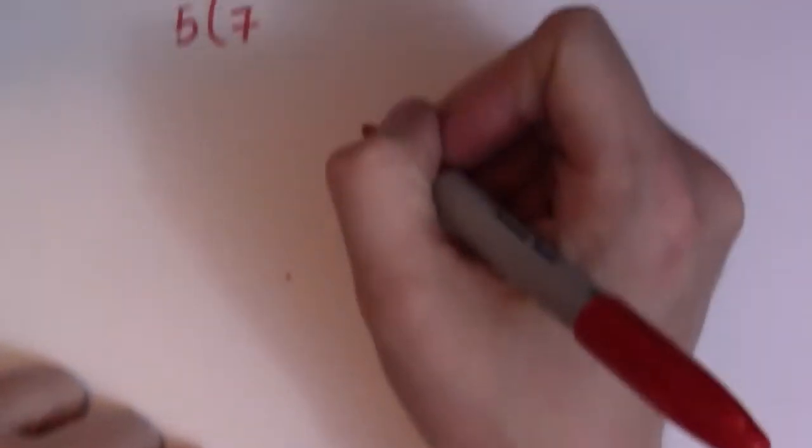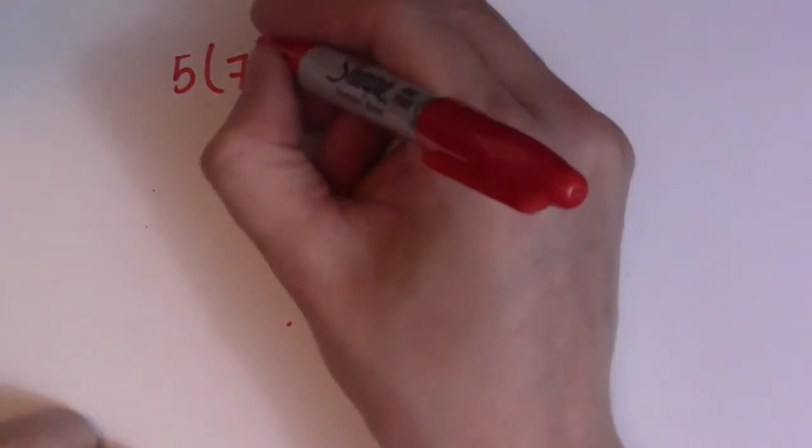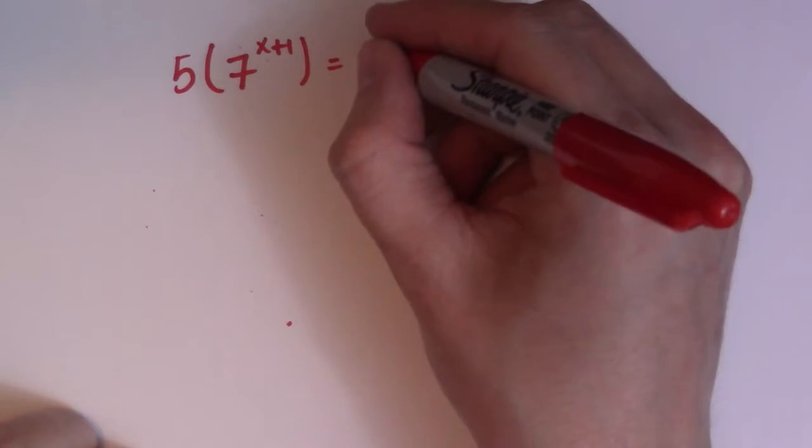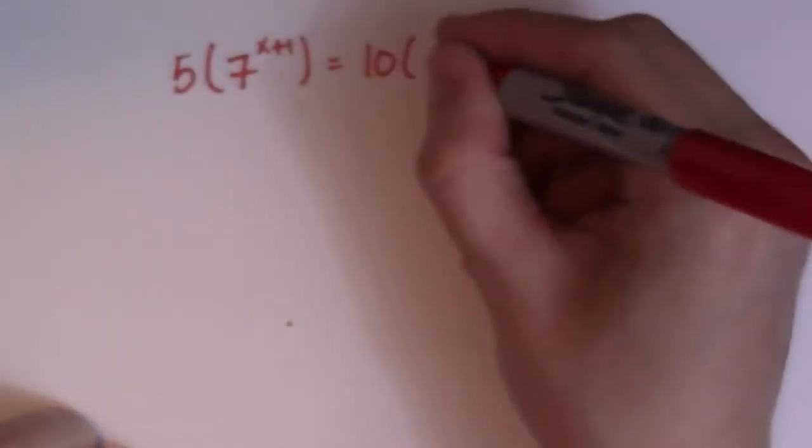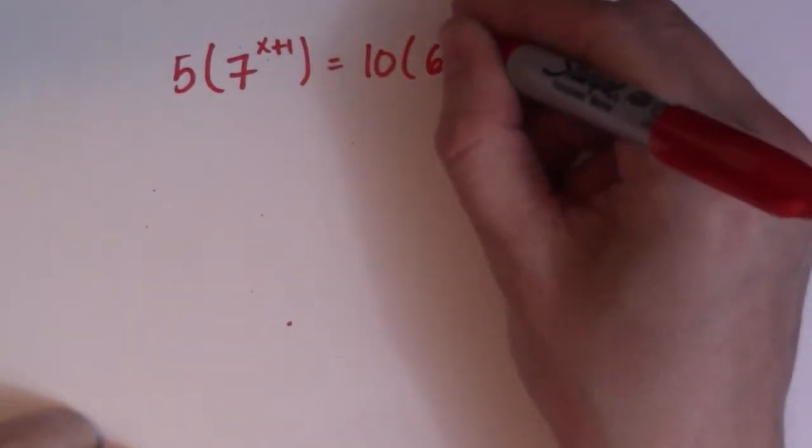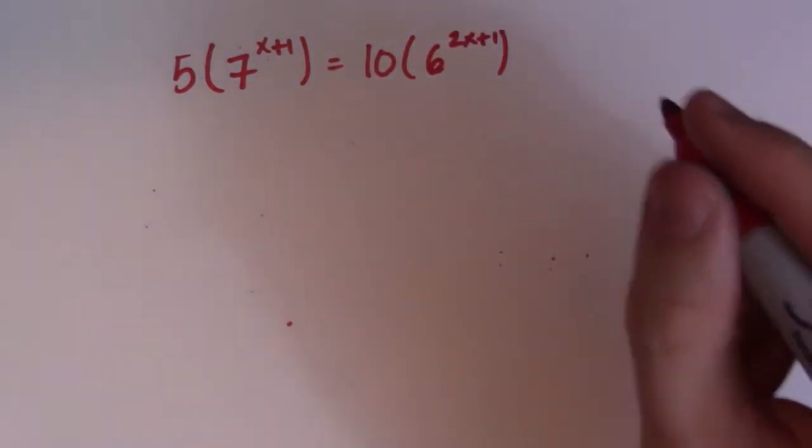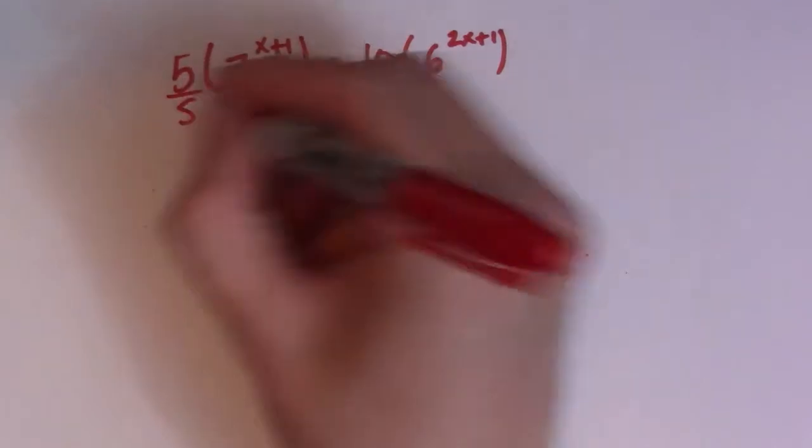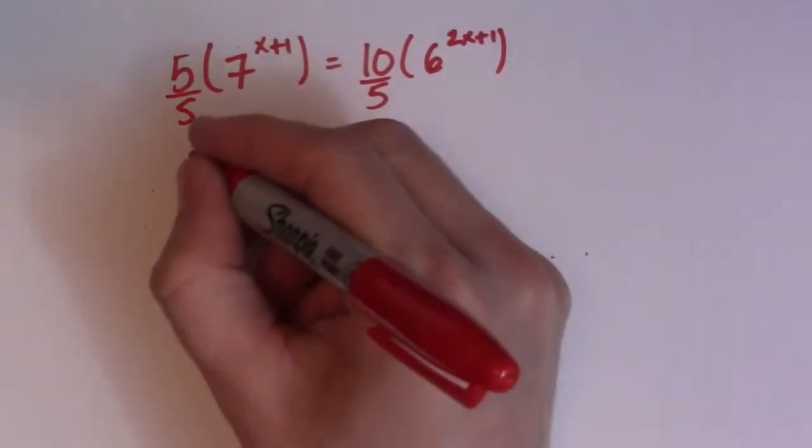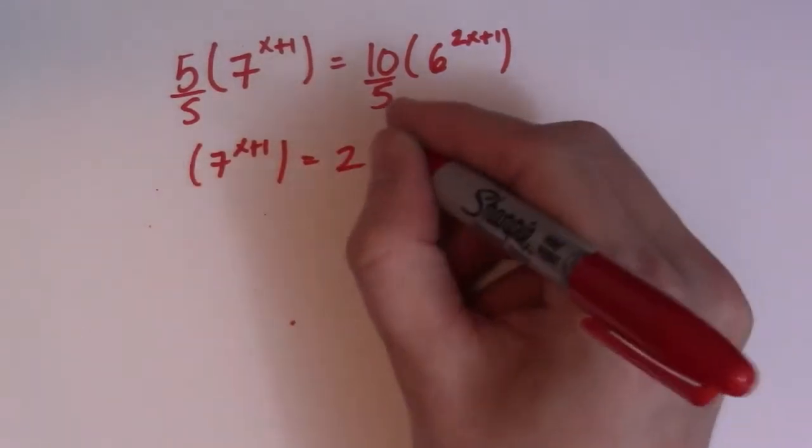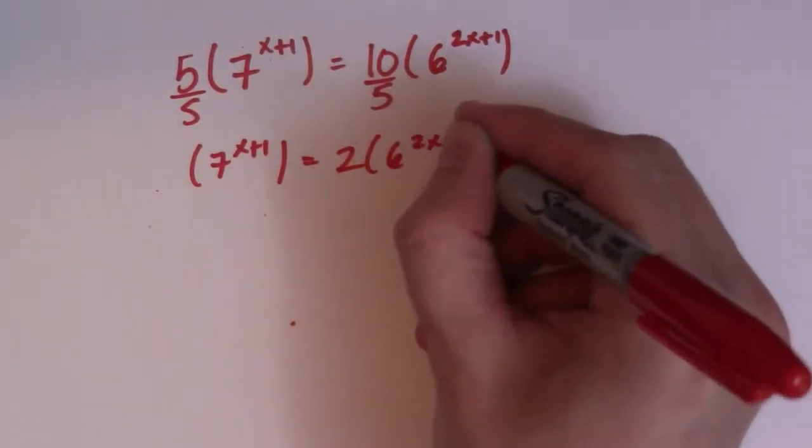So I'll make it more difficult with the exponents. So 5, 7 to the x plus 1 is equal to 10, 6 to the 2x plus 1. All right, so this one's going to be a doozy. So I divide both sides by 5, first of all. And I get 7x plus 1 is equal to 2, 6 to the 2x plus 1.